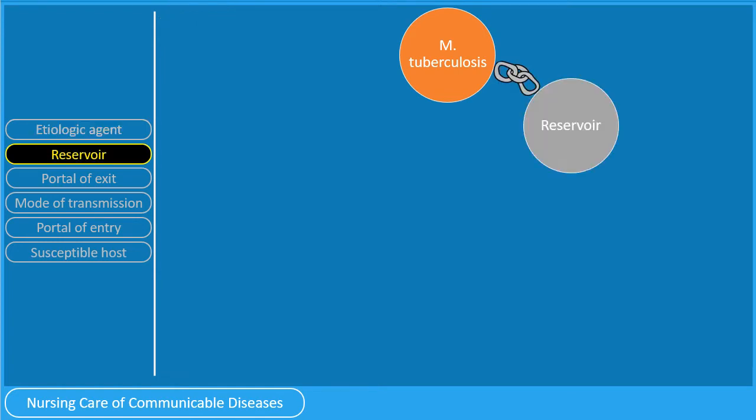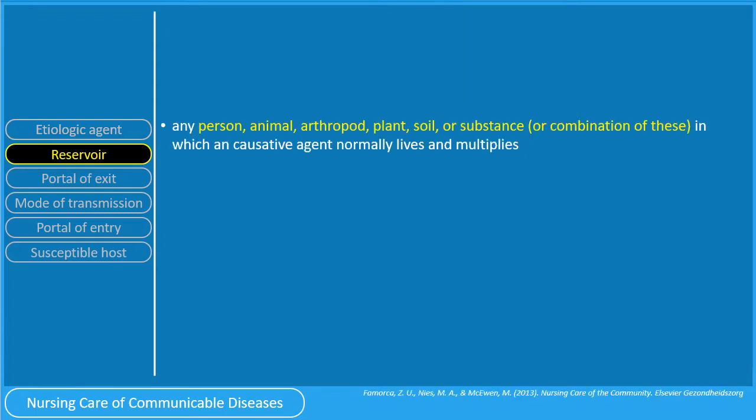Let us proceed to the next link in the chain of infection: the reservoir. The reservoir of an infectious agent is the habitat in which the agent normally lives, grows, and multiplies. Reservoirs include any person, animal, arthropod, plant, soil, or substances, or a combination of these. The reservoir may or may not be the source from which an infectious agent is transferred to a host. For example, the reservoir of Clostridium botulinum is soil, but the source of most botulinum infections is improperly canned food containing C. botulinum spores.